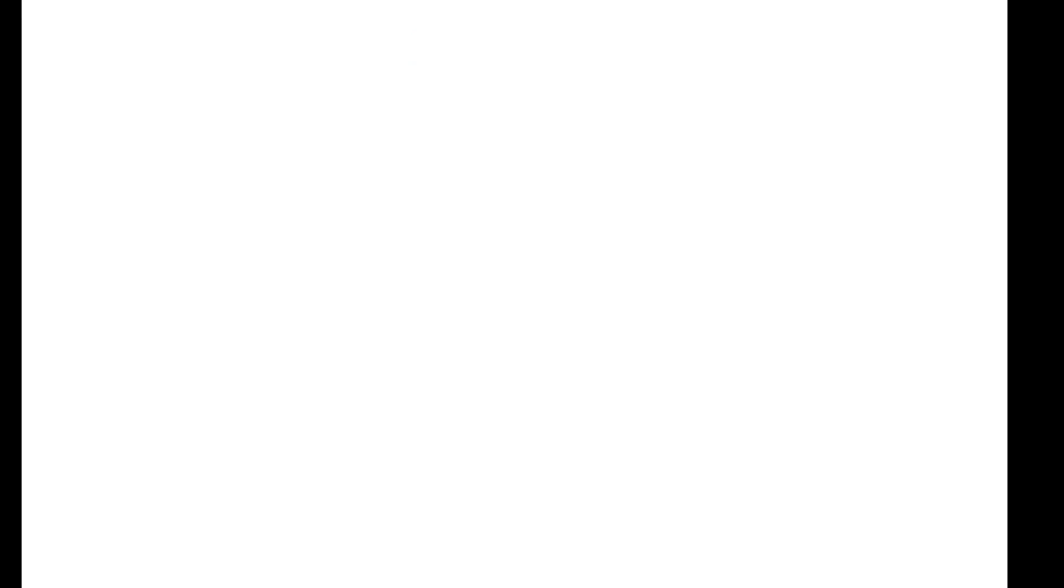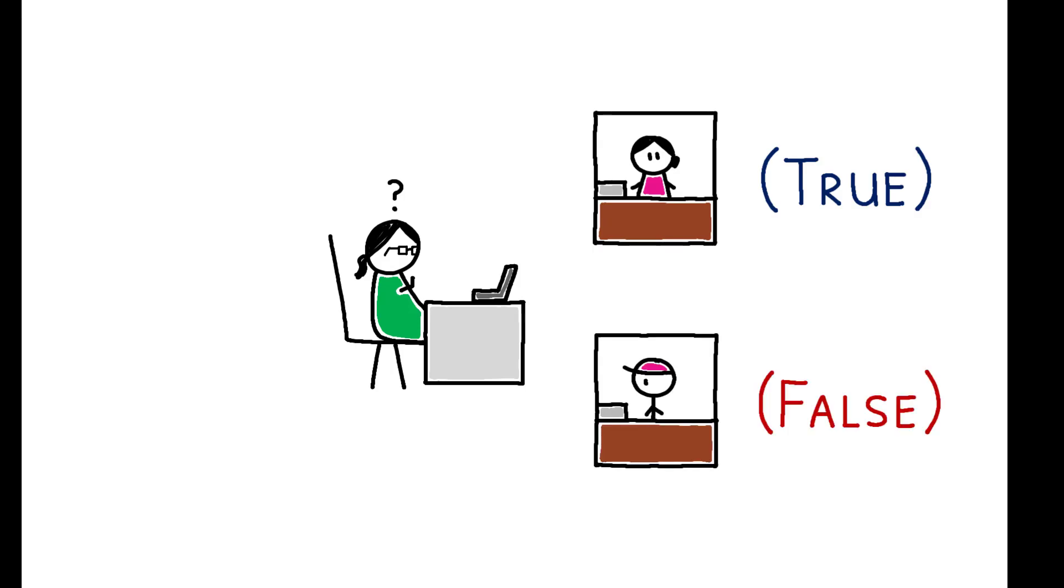The first key finding is that receivers had almost no ability to correctly classify lies and truthful videos. Their accuracy was between 50 and 53%, which is not significantly different from the 50% chance of guessing randomly.